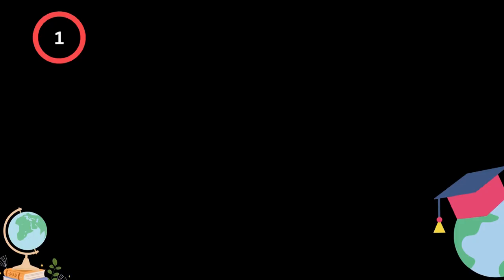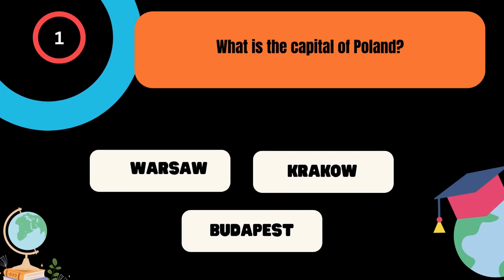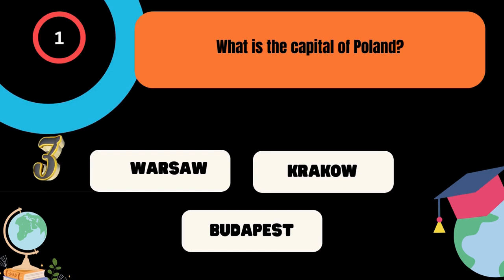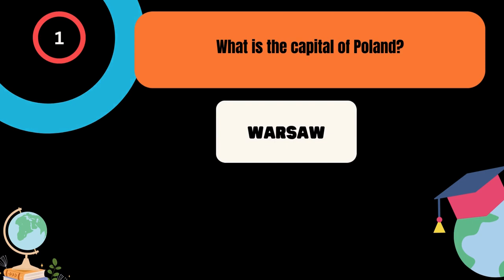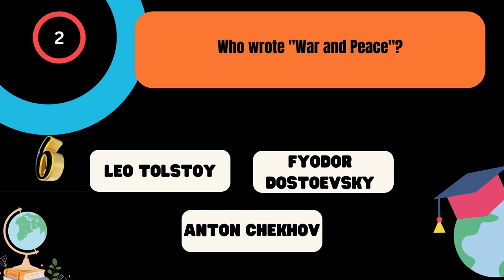What is the capital of Poland? A. Warsaw, B. Krakow, C. Budapest. And the correct answer is Warsaw. Who wrote War and Peace? A. Leo Tolstoy, B. Fyodor Dostoevsky, C. Anton Chekhov. And the correct answer is Leo Tolstoy.